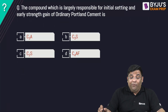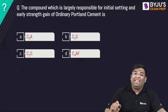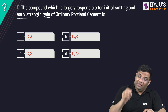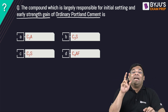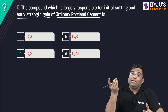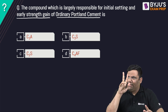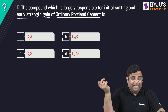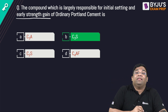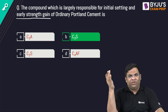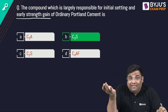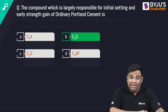Next question: Which compound is largely responsible for initial setting and early gain of strength in Ordinary Portland Cement? There is confusion between C3A and C3S. The correct answer is C3S, because the question mentions 'early gain of strength.' C3A is responsible for initial fast setting but has no contribution to early strength gain, whereas C3S contributes to both early setting and early strength.